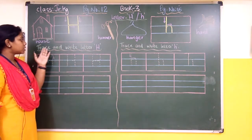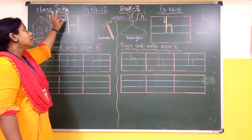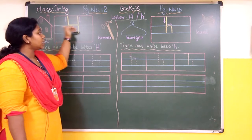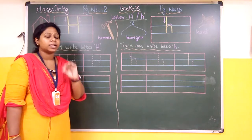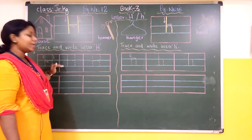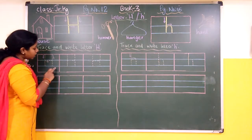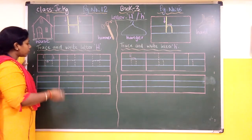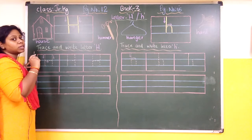Now coming to the next part — that is trace and write letter H. We will first trace, then write. So before that, notice that for capital letter H, when we write in four lines, we only utilize the first three lines. First three lines are only used to write capital letter H. And as you can see, arrow marks are given, so you will follow the arrow marks while tracing.